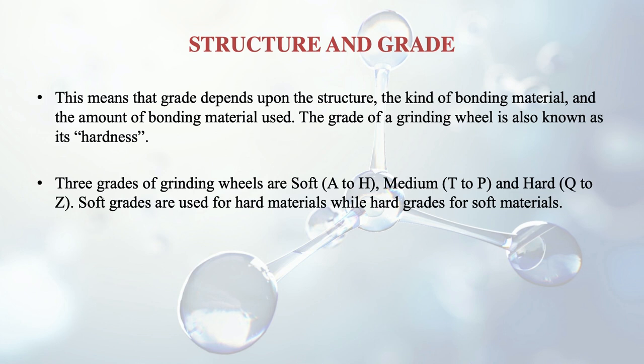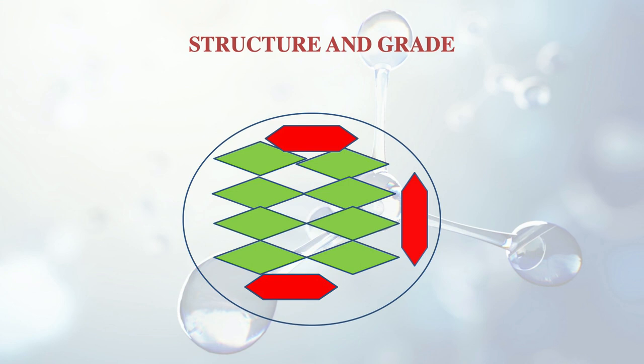There are three grades of grinding wheels: soft (A to H), medium (I to P), and hard (Q to Z). Soft grades are used for hard materials and hard grades are used for soft materials, because the harder wheel can extract softer particles more effectively. Grade depends upon the structure, the kind of bonding material, and the amount of bonding material used. In a grinding wheel, the green particles represent the grains and red ones represent the bond, with both grain-to-grain and grain-to-bond contacts determining the overall strength and grade.